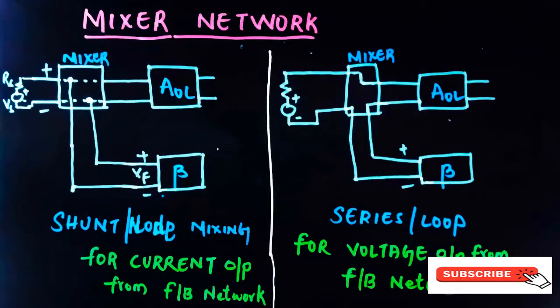In the mixer network, the original signal from the source and the output signal from the feedback network are combined. This mixing is done in two ways: shunt mixing and series mixing. These methods are specific to the type of signal coming from the feedback network — if the signal is current, it is shunt mixing; if the signal is voltage, it is series mixing.